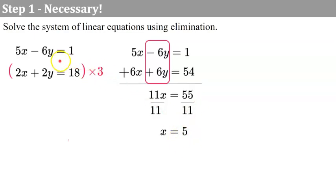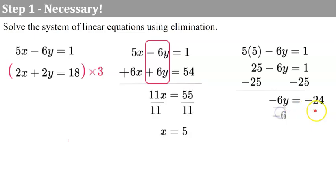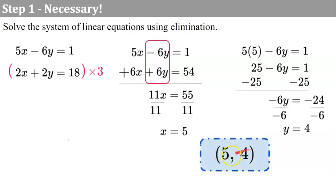Take this back to the first equation: 5 times 5 for x minus 6y equals 1. So 25 subtract 6y is 1. Subtract 25 from each side giving me negative 6y equals negative 24. Divide both sides by negative 6 and y is equal to 4. So the solution ordered pair is (5, 4). Let's check: 5 times 5 is 25, subtract 24, and 25 subtract 24 is 1. 2 times 5 is 10 plus 2 times 4 is 8; 10 plus 8 is 18 — so it checks.